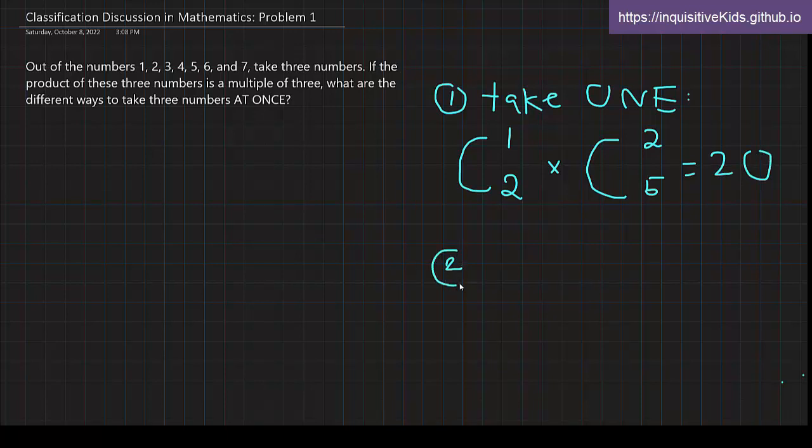But we also have to think about our second circumstance, which is take both. If we take both, how many different possibilities will there be? If we take both, the equation will be written as C, and out of 2, take both. So, take 2.